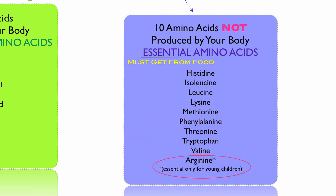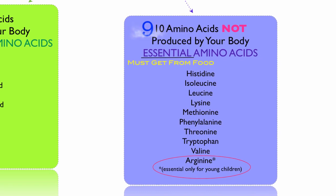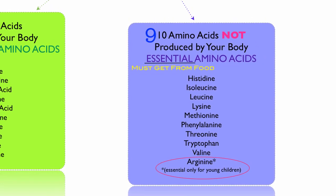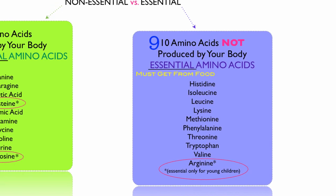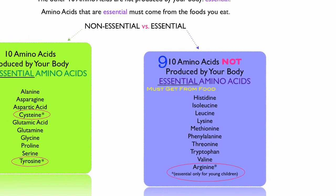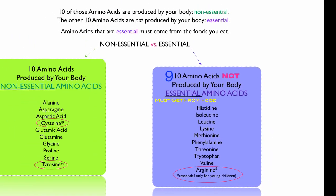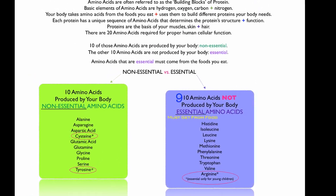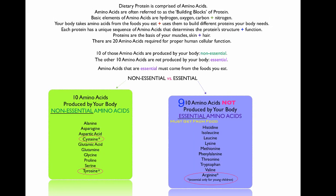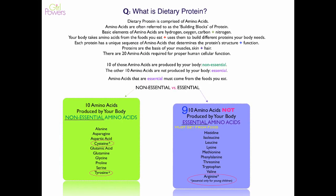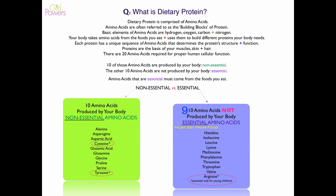The last one, arginine, is essential only for young children. So you'll often see the number nine in terms of essential amino acids. Also, over in the non-essential amino acids, there are two — cysteine and tyrosine — that are considered essential for young children as well. So there are basically three in total that are essential for young children, because the metabolic pathways in their body that create these are not yet formed in very young children.